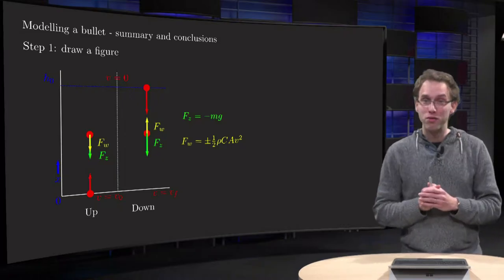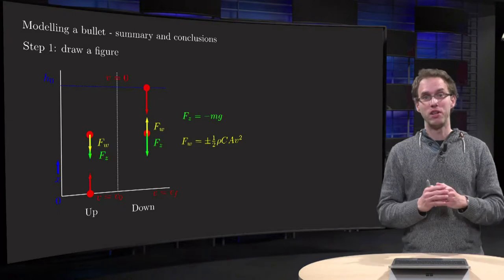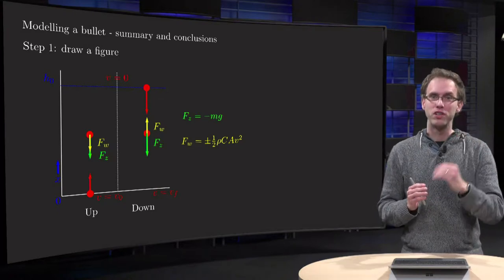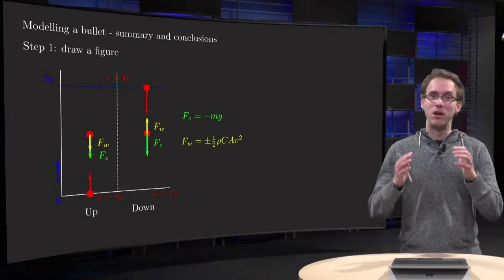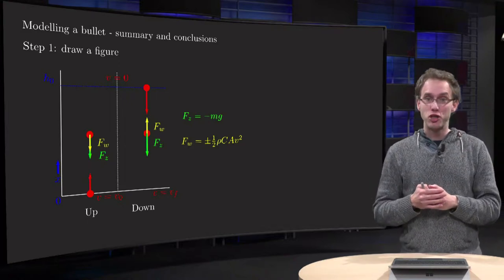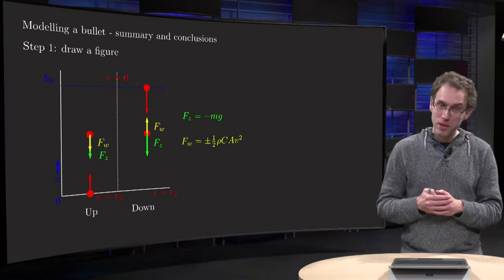Modeling a bullet turned out to be quite involved. We needed a lot of calculus. We took 4 important steps. You need to take those steps in every modeling problem. Let us take a look at those steps in general and summarize what they meant in the case of our problem in this video.